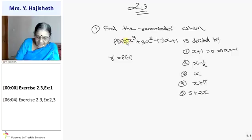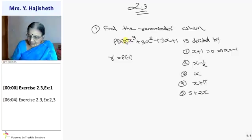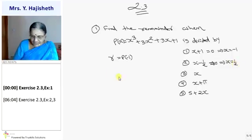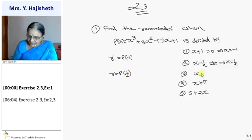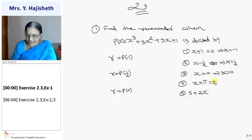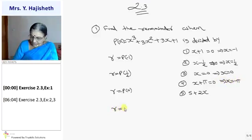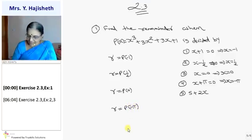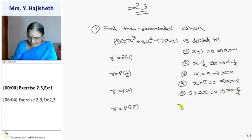This is our p(x). For the second sum, equating x − 1/2 = 0 gives x = 1/2, so the remainder is p(1/2). For the third sum, x = 0, so remainder is p(0). For the fourth sum, x + π = 0 gives x = −π, so remainder is p(−π). And for the fifth, 5 + 2x = 0 gives x = −5/2, so remainder is p(−5/2).